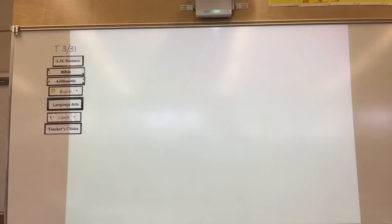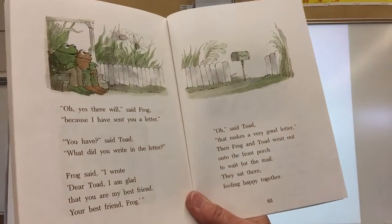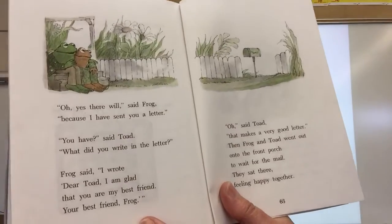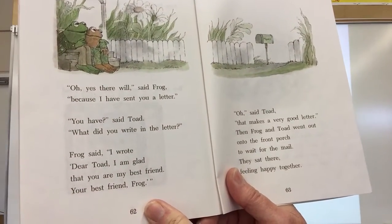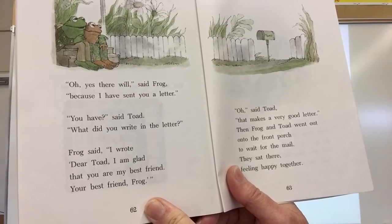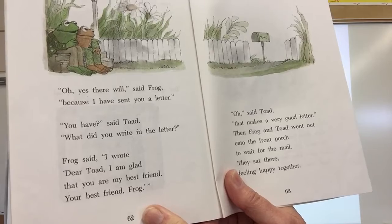Frog, why do you keep looking out of the window, asked Toad. Because now I am waiting for the mail, said Frog. But there will not be any, said Toad. Oh, yes, there will, said Frog. Because I have sent you a letter. You have, said Toad. What did you write in the letter? Frog said, I wrote, Dear Toad, I am glad that you are my best friend. Your best friend, Frog. Oh, said Toad, that makes a very good letter.